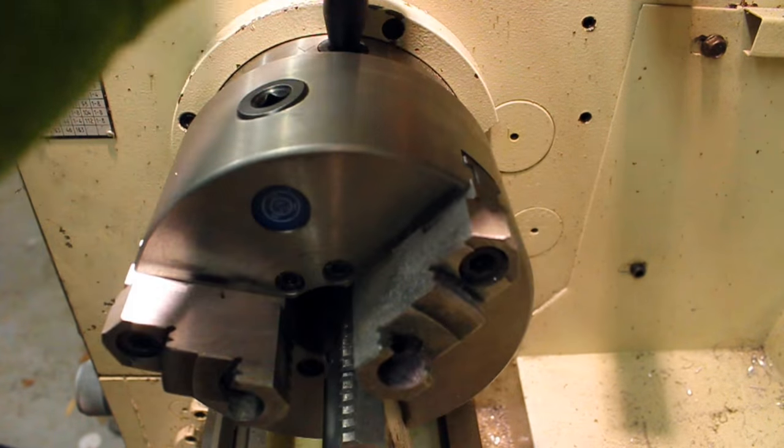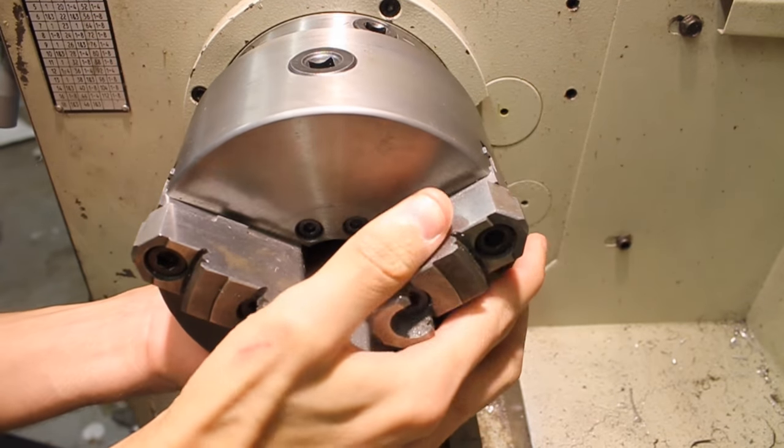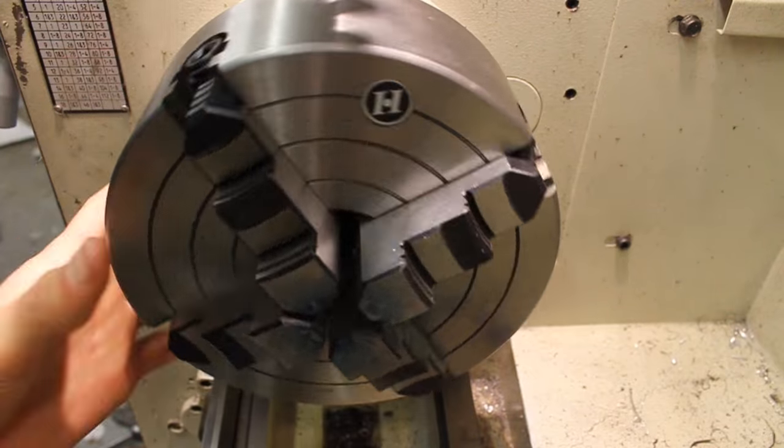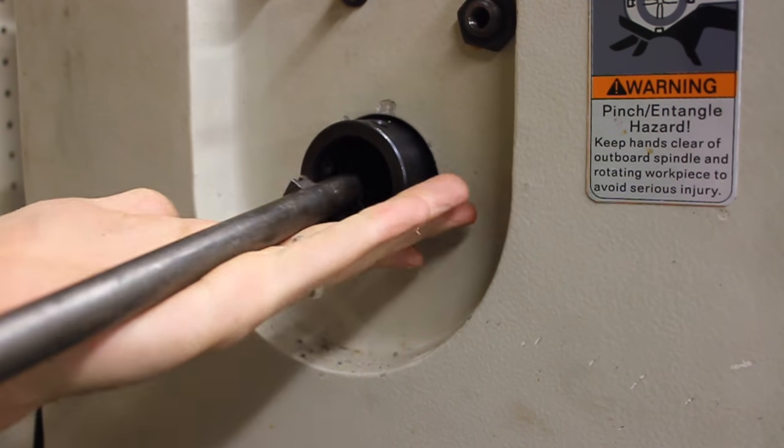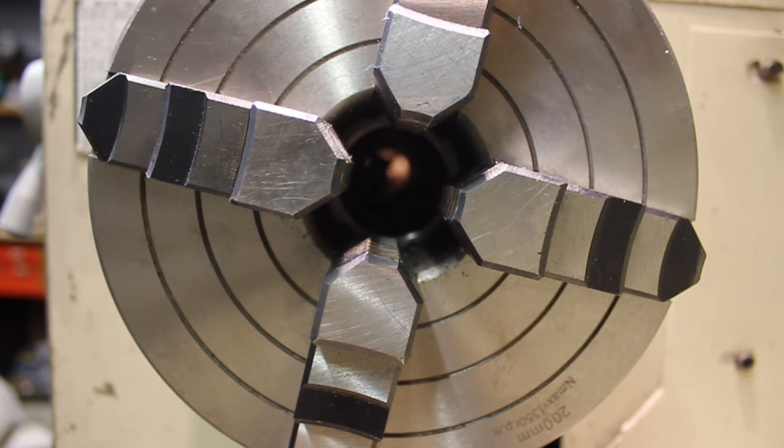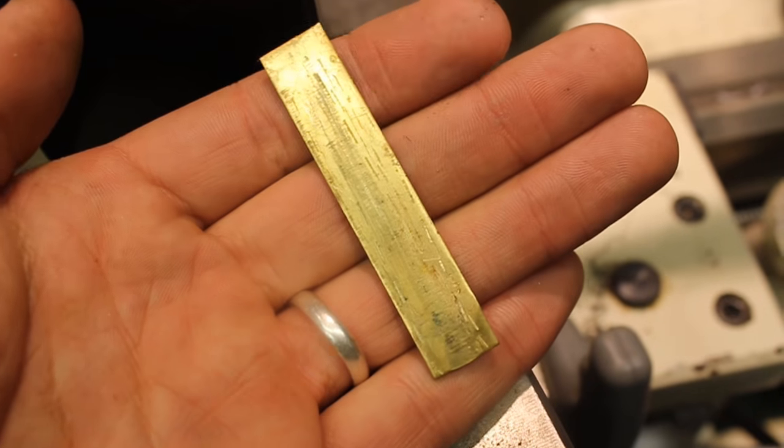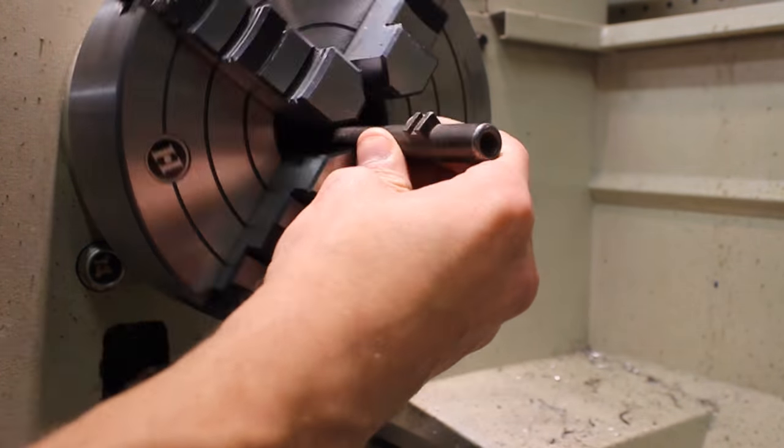The whole thing starts by first removing the three-jaw chuck, which has jaws that move together, to the four-jaw chuck, that has jaws that move independently from each other. The barrel is then placed through the lathe's headstock, and brass shims are placed between the barrel and the jaws to protect the barrel from any marring.